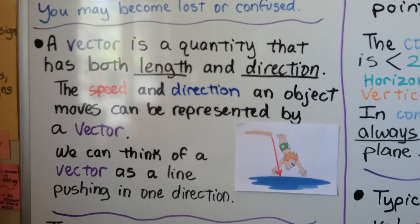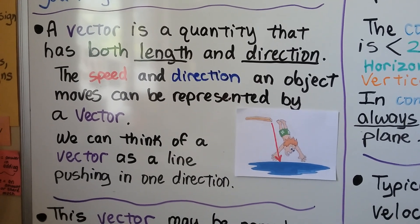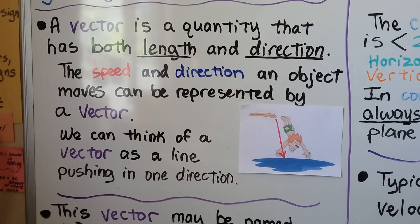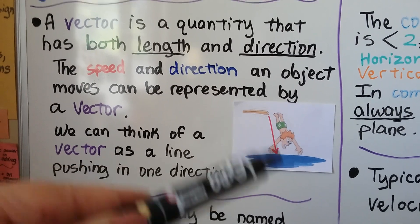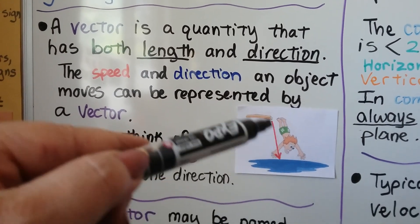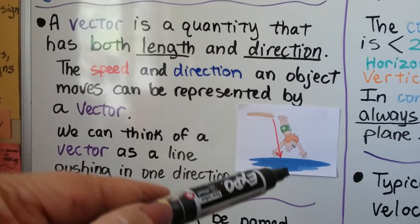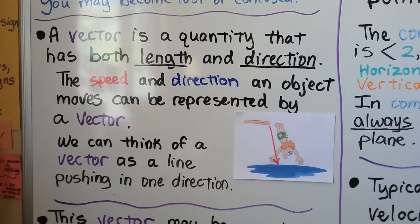A vector is a quantity that has both length and direction. And the speed and direction an object moves can be represented by a vector. So this guy jumping into the water from the diving board, he's going in this direction down and at a certain speed. So we can think of a vector as a line pushing in one direction.